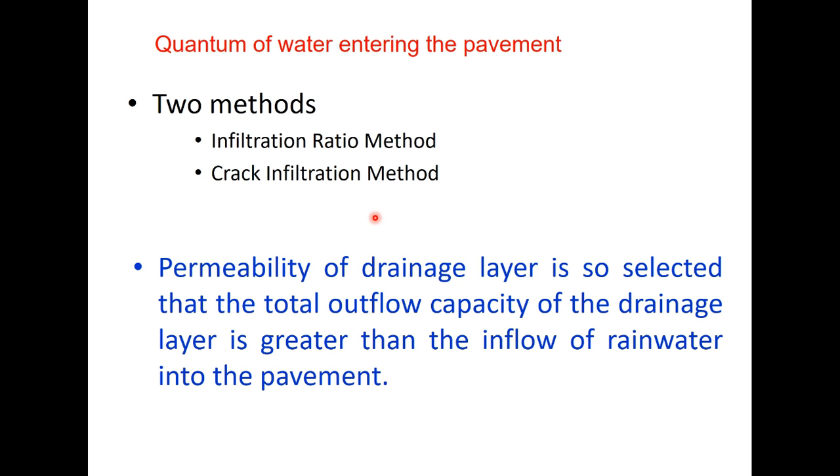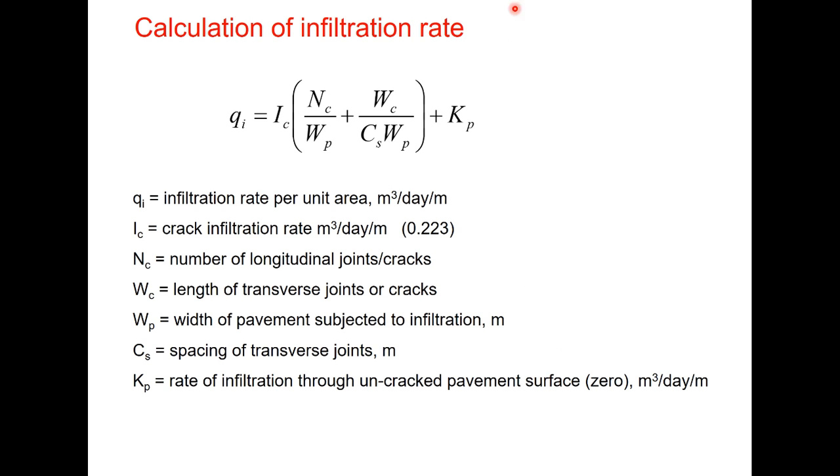Now quantum of water entering the pavement can be estimated by two methods, infiltration ratio method or crack infiltration method and IRC suggests this method of estimating the quantum water and permeability of the drainage layer is so selected that the total outflow capacity of the layer is greater than the inflow of rainwater into the pavement. The infiltration rate can be calculated using this equation where all these parameters.